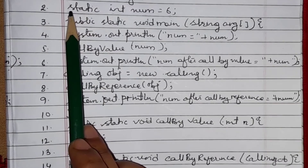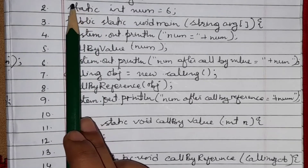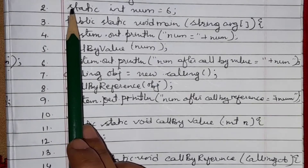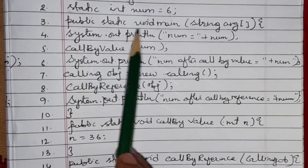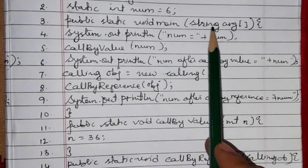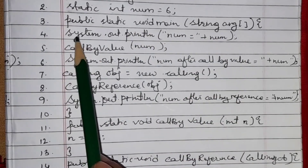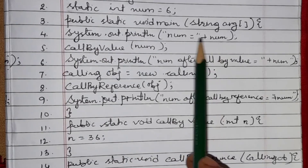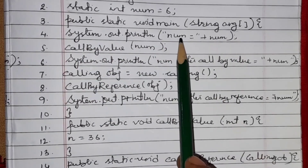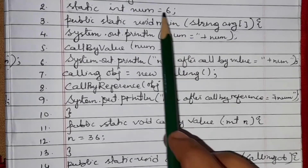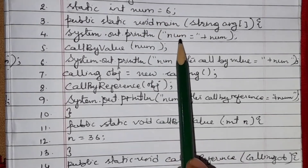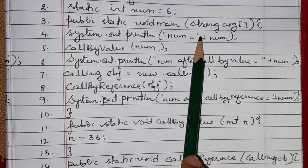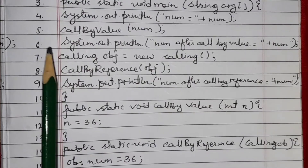The variable will not change throughout the whole program for any object — that's why it is static. In the main function, 'public static void main', we write 'System.out.println("num = " + num)', which will print the value of num, which is 6.